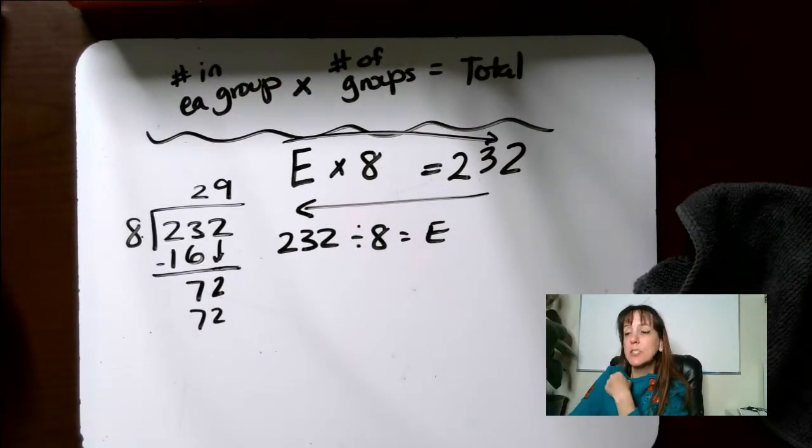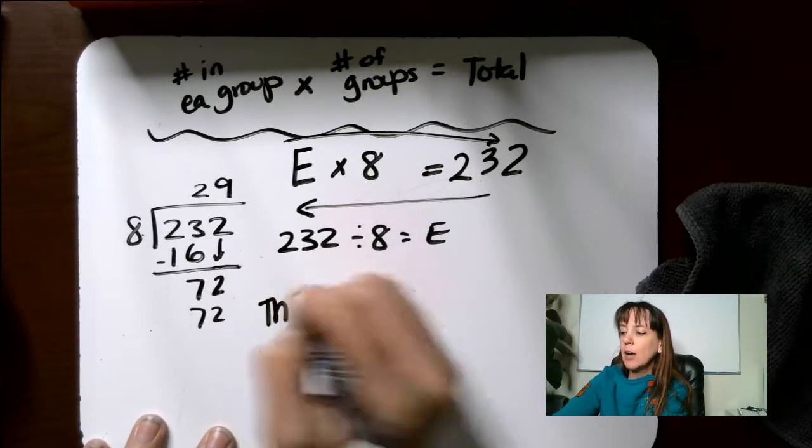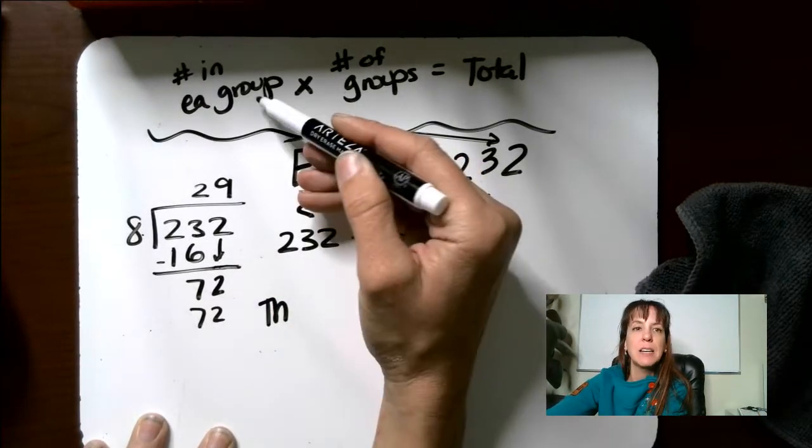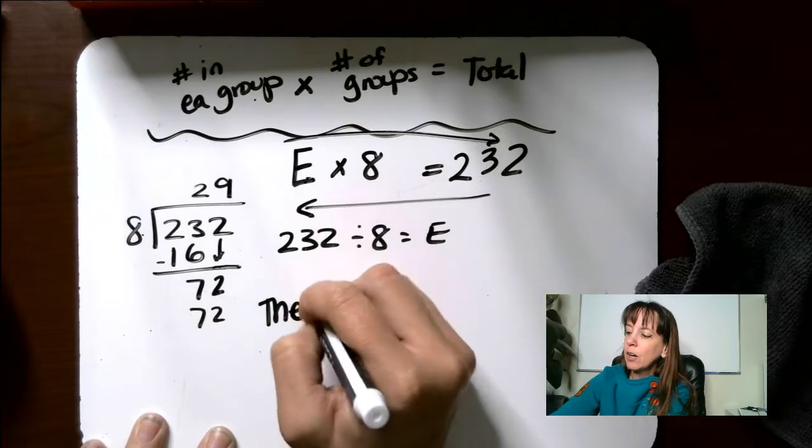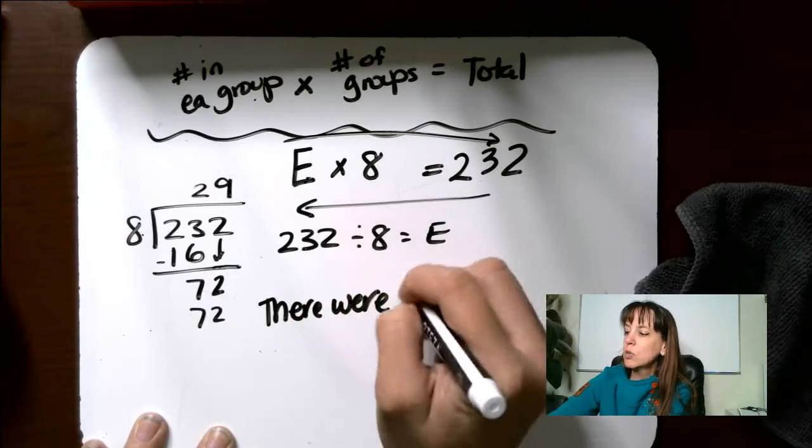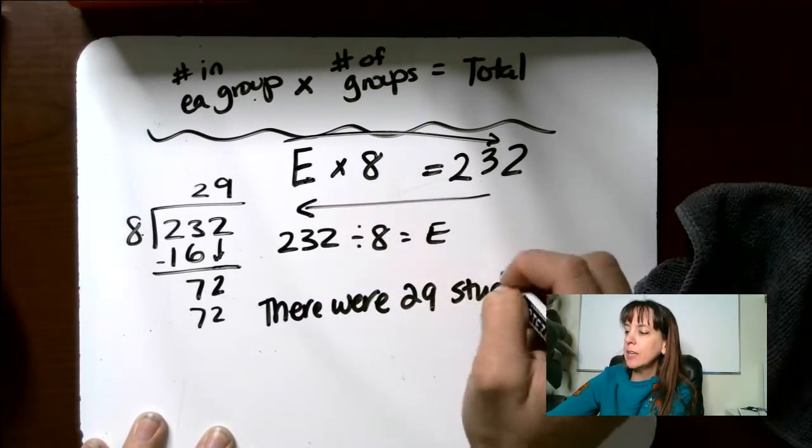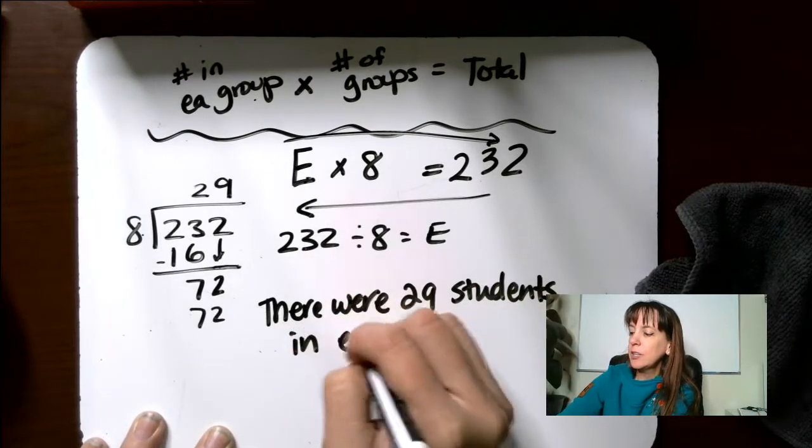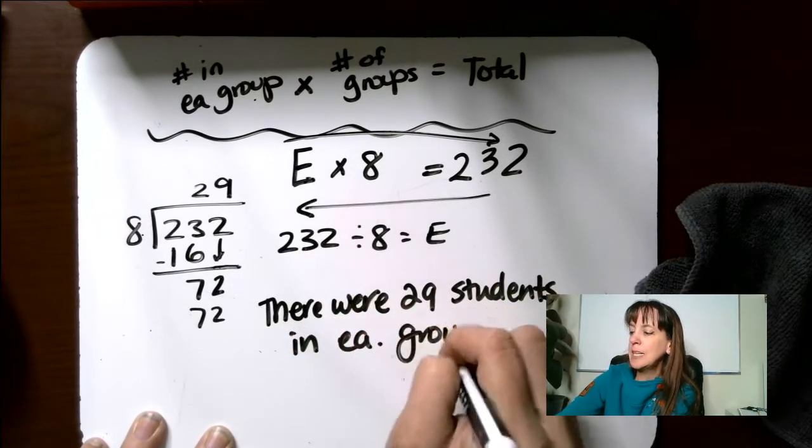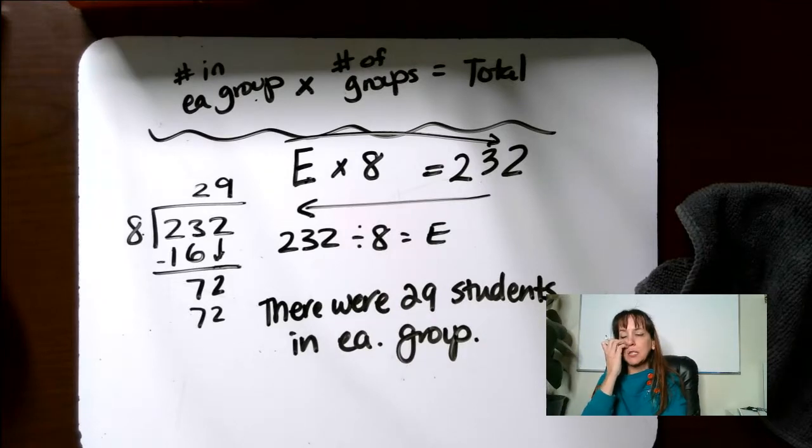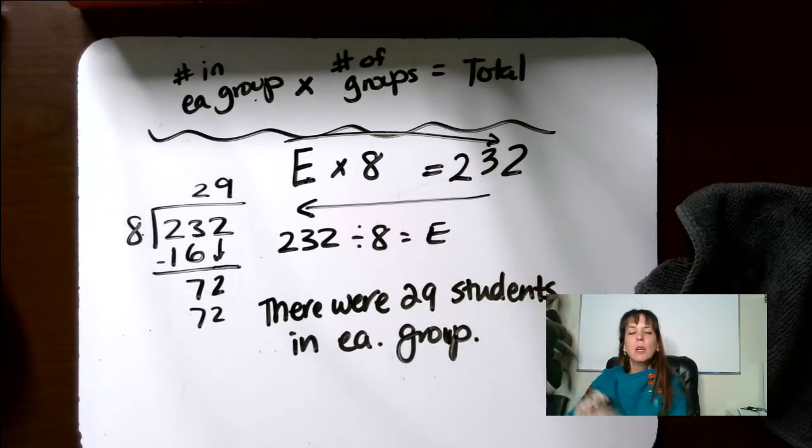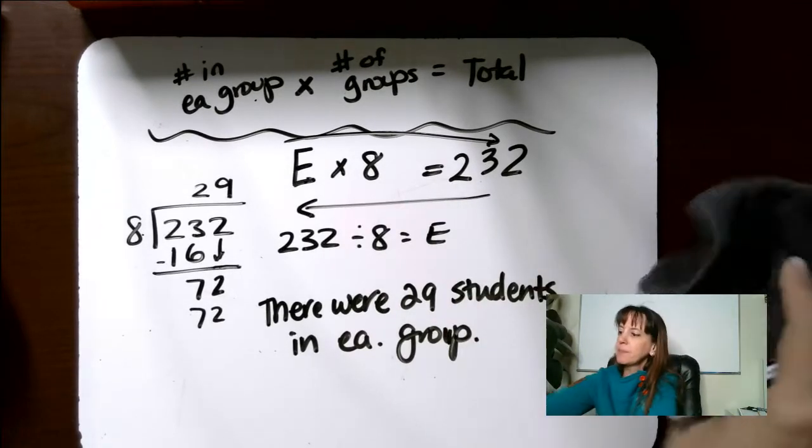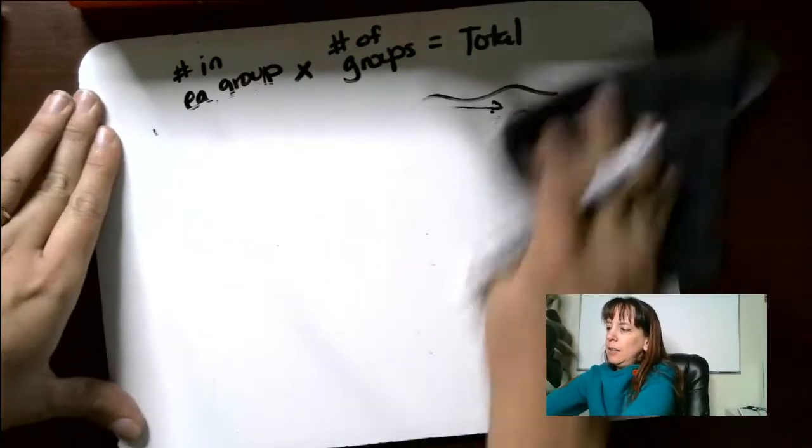This is a word problem and I want you to write a sentence for your word problems. E represented the number in each group. There were 29 students in each group or in each classroom.